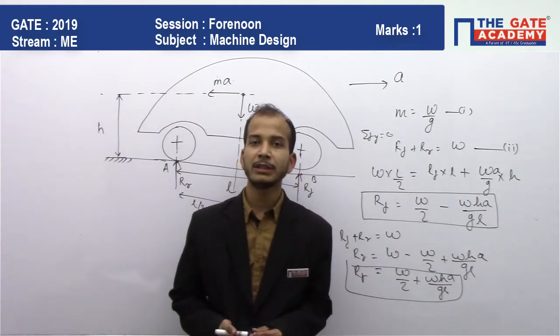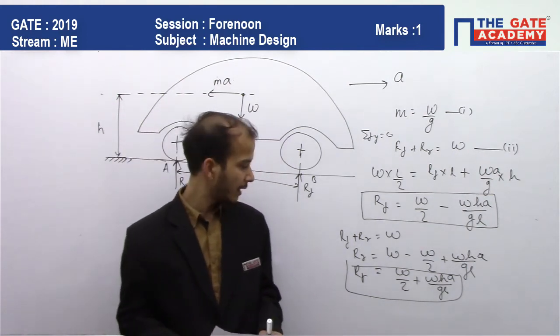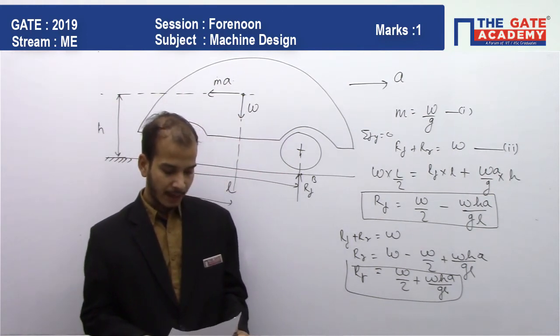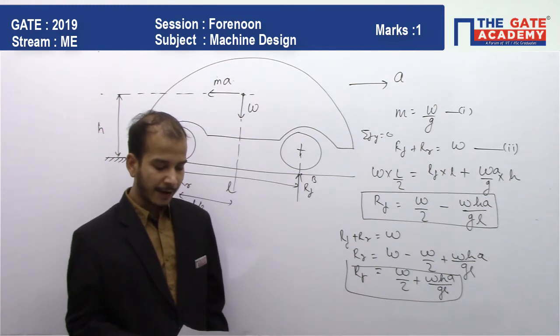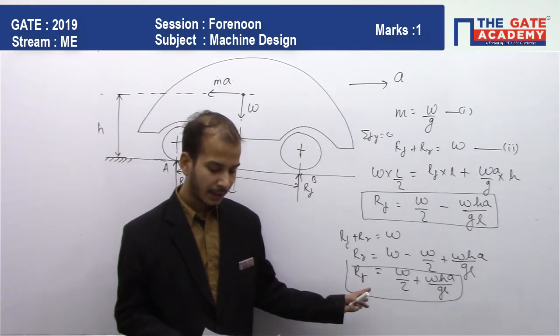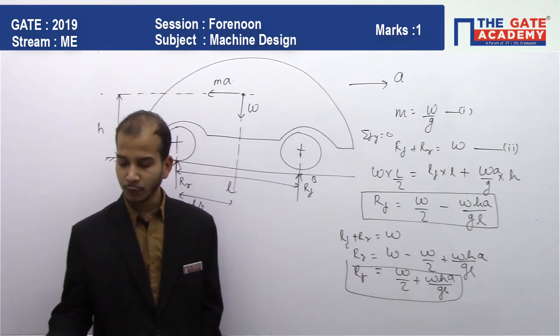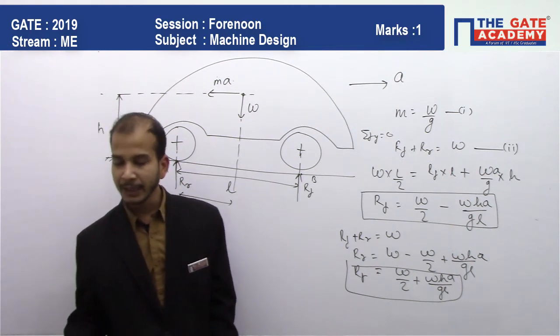Rf's value is W by 2 minus Wha by gl. So option B: Rf's value is W by 2 plus Wha by gl, and Rr's value is W by 2 minus Wha by gl.